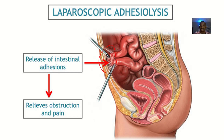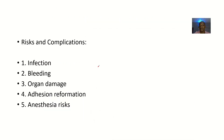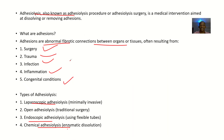For example, after surgery a loop of bowel may adhere to the top part of the abdomen. Risks and complications from adhesiolysis itself include infection, bleeding, organ damage, recurrence of adhesions, and anesthesia-related risks.